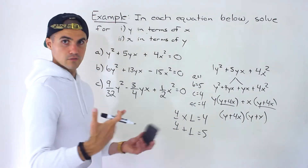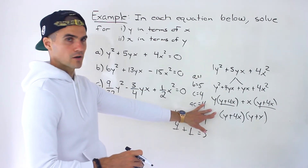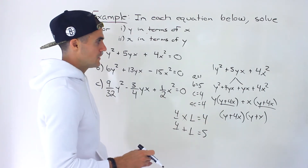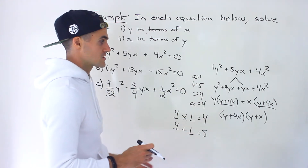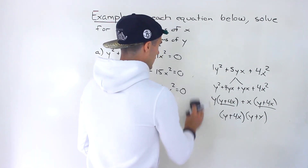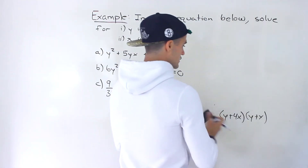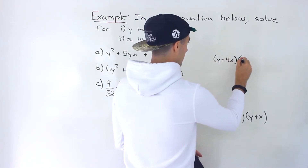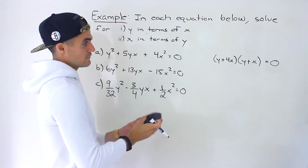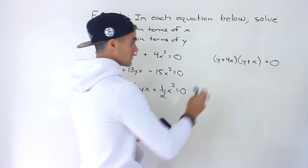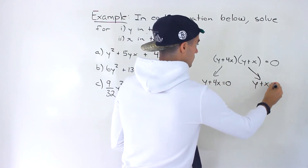We've done a couple of examples before where we factored expressions with multivariables, so if this is making you uncomfortable, I highly recommend going back to review those. I'm assuming you're fairly comfortable with factoring multivariable expressions. So we've factored it. This equals 0, which is the same as these two factors multiplying and equaling 0. We need to figure out when each bracket equals 0 — so when does y plus 4x equal 0, or when does y plus x equal 0?